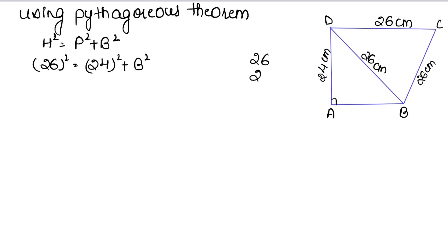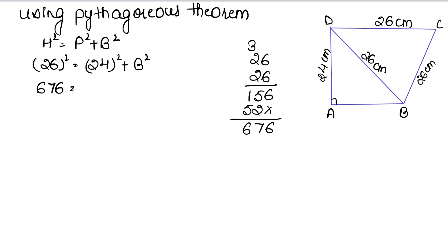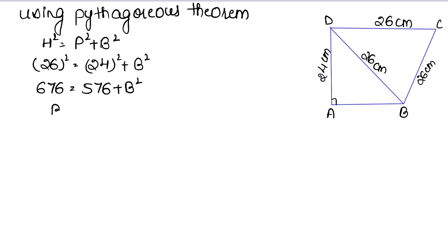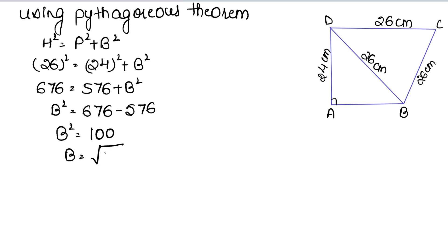Calculating: 26 squared is 676, and 24 squared is 576. So, 676 equals 576 plus B squared. Therefore, B squared equals 676 minus 576, which is 100. So B equals the square root of 100, that is 10 centimeters. So AB is 10 centimeters.